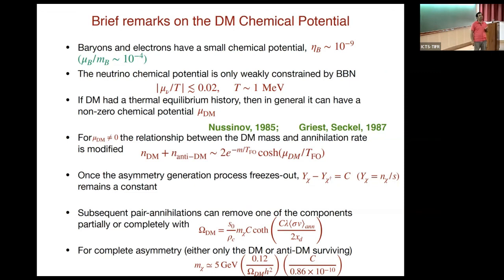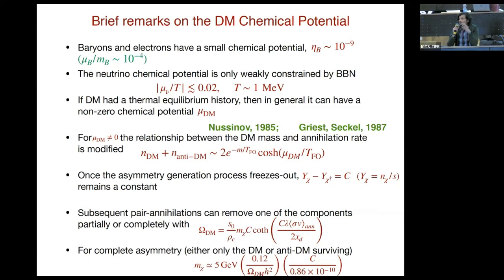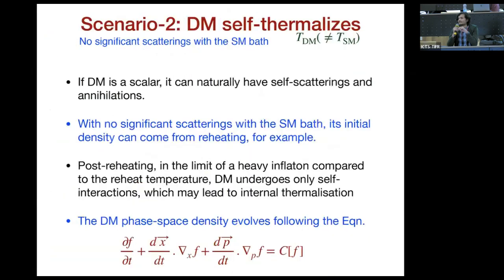A question was raised about the scenario where dark matter self-scattering and dark matter–standard model scattering are comparable. The speaker replied that if the dark matter scatters significantly with the standard model, it thermalizes with the standard model, and then everything is decided by the standard model temperature; self-interactions would not affect the density in that case. If they are truly comparable, you solve the full kinetic equation with all terms included to see the outcome — it is a competition between the magnitudes of each interaction rate.